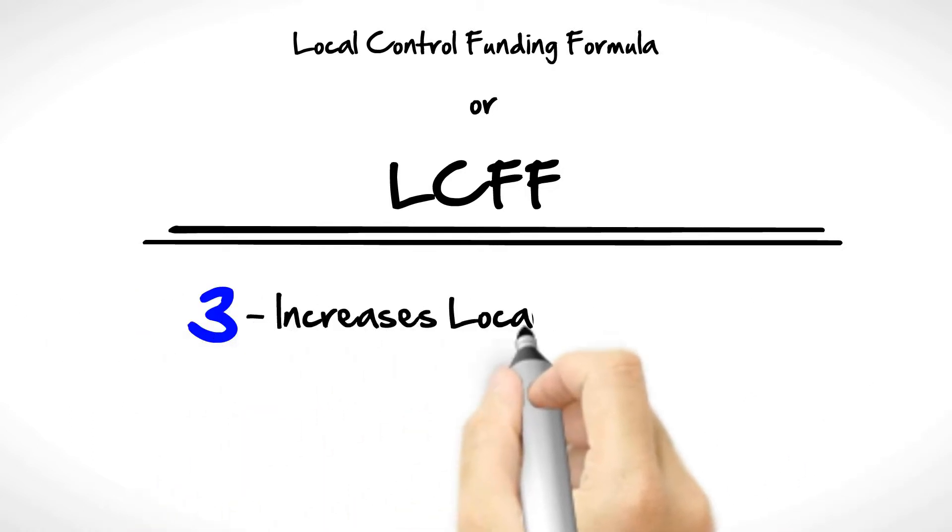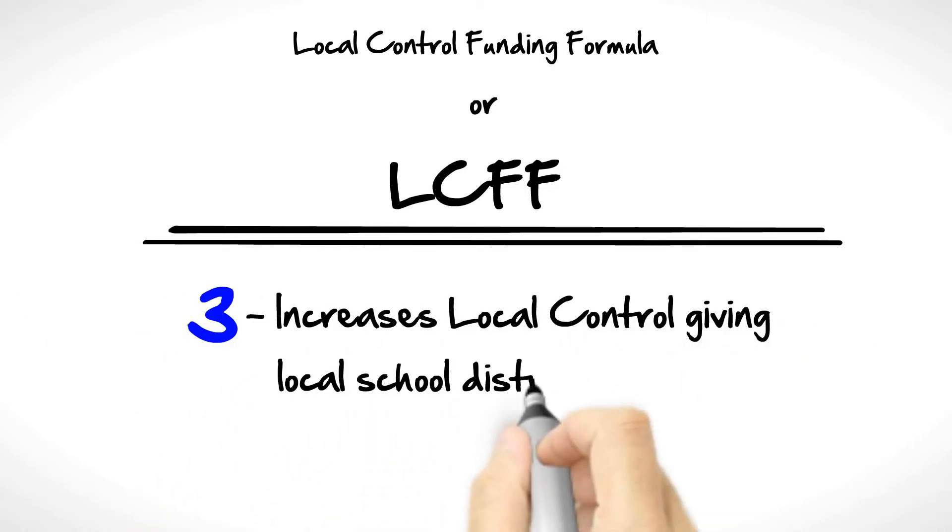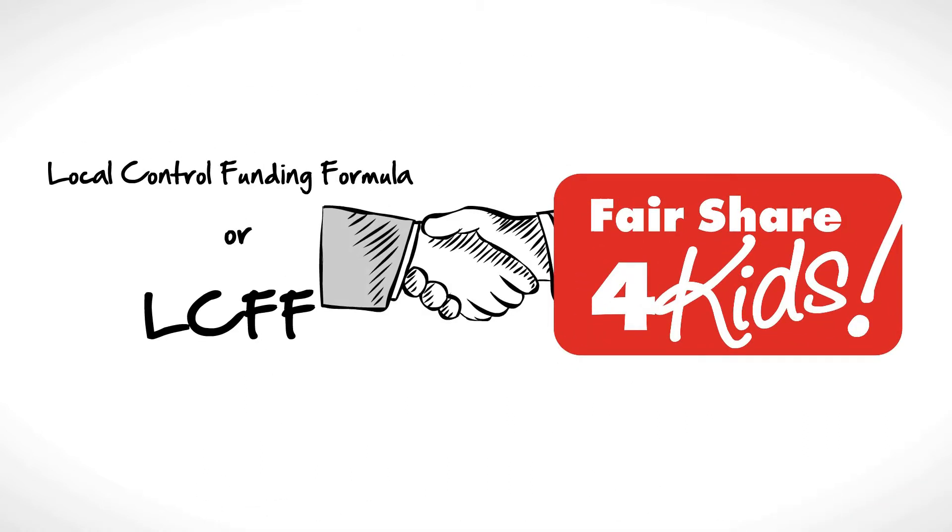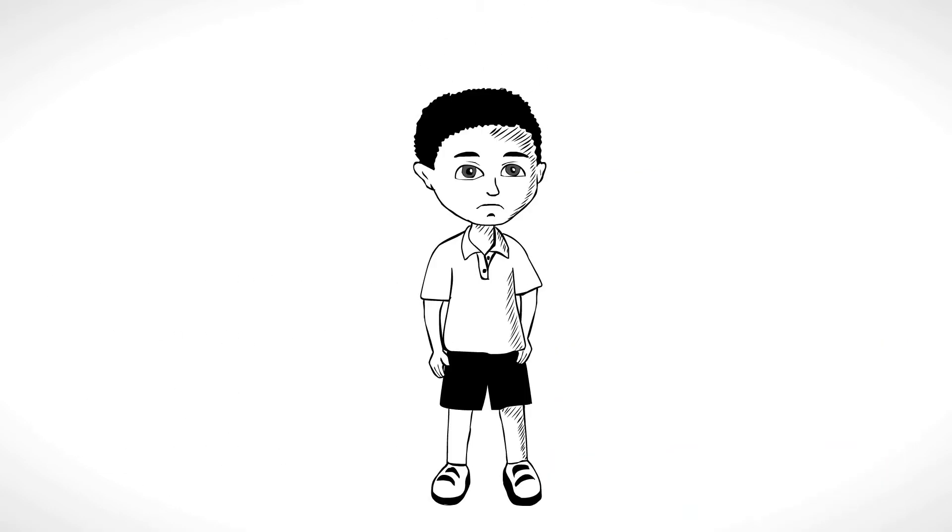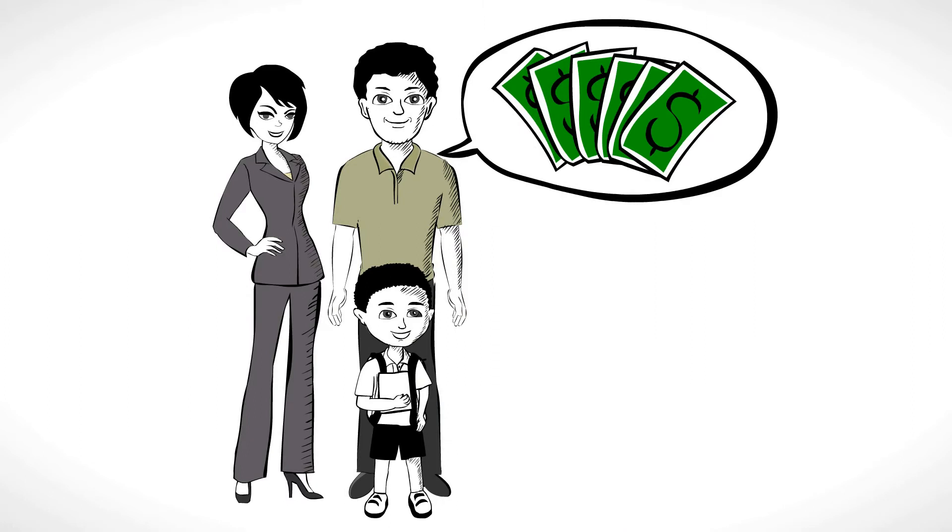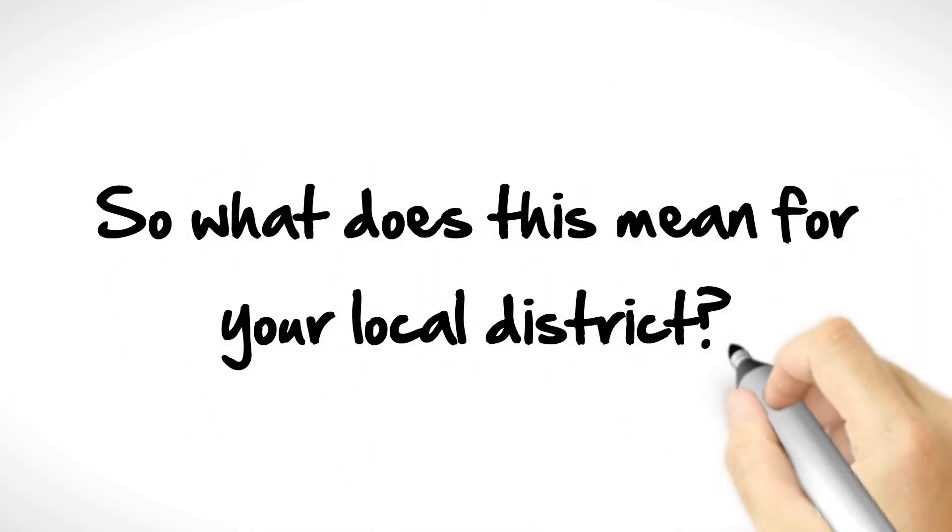Three: Increases local control, giving local school districts more options on how to best use funds. Fair Share for Kids supports this plan so long as low-income students receive the support they need and parents have a voice on how monies are spent. So what does this mean for your local district?